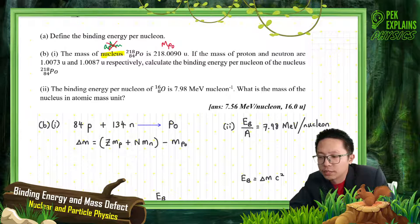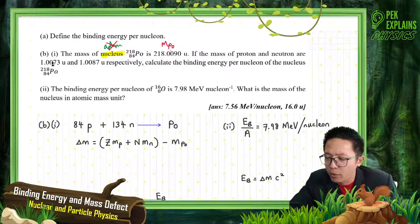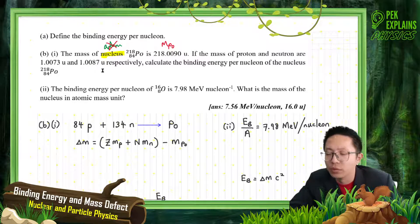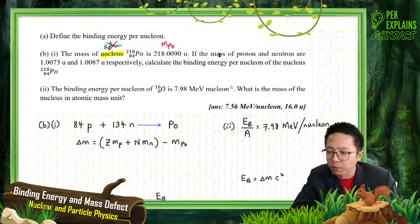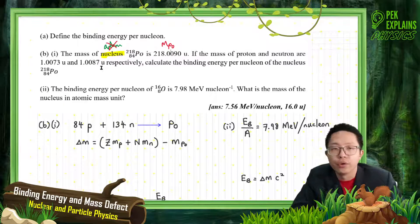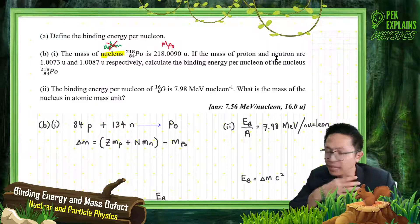The mass of the proton and neutron are given as 1.0073 u and 1.0087 u. Since the question already provides the mass of proton and neutron, just use those values — you don't have to check the list of constants.